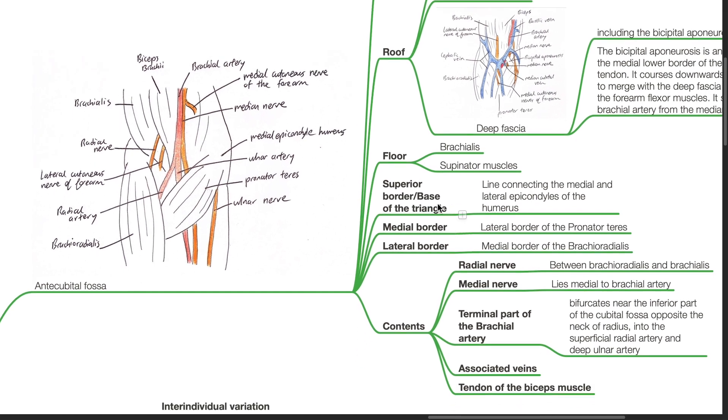The superior border or the base of the triangle is a line connecting the medial and lateral epicondyles of the humerus. The medial border consists of the lateral border of the pronator teres and the lateral border of the cubital fossa consists of the medial border of the brachioradialis.